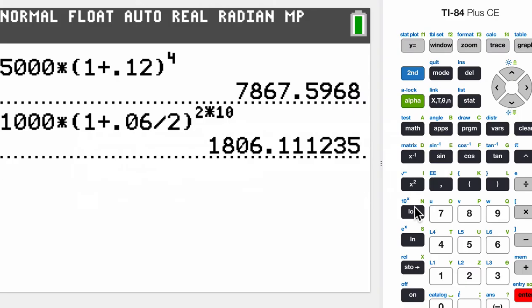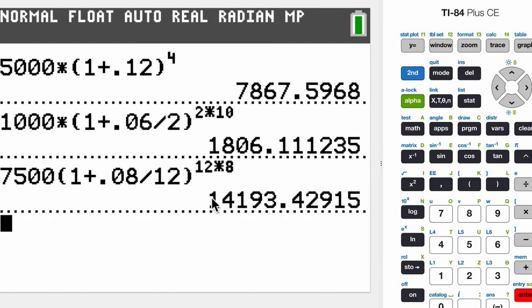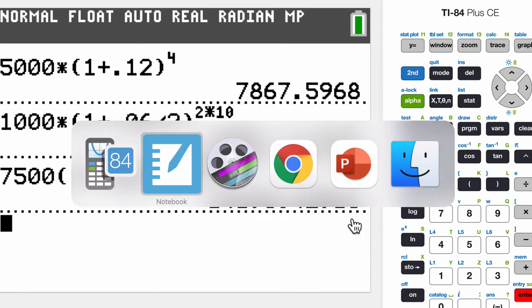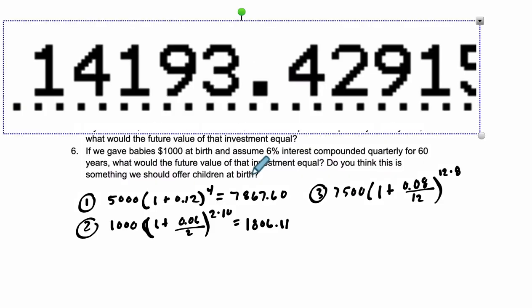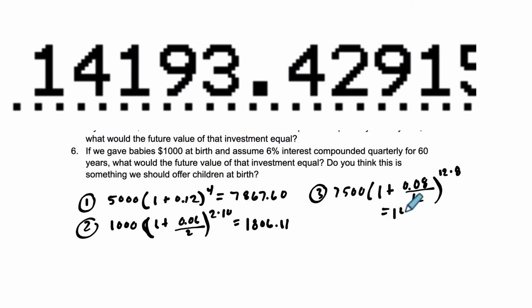7,500 times 1 plus 0.08 divided by 12 to the power of 12 times 8 years, $14,193.43. So that's going to equal $14,193.43. And that's the third one. And I think you see how this is going.